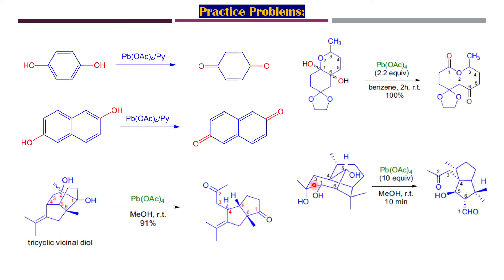In another cyclic example, the 1,2-diol positions undergo cleavage, leading to formation of an aldehyde on carbon one and a ketone on the adjacent carbon.